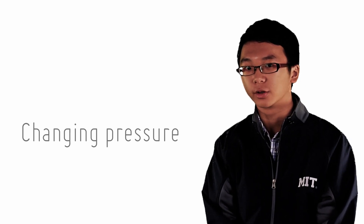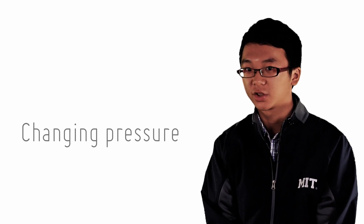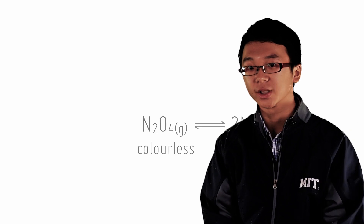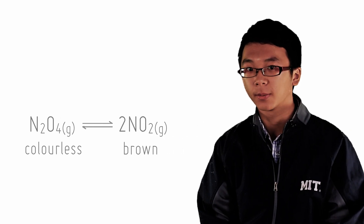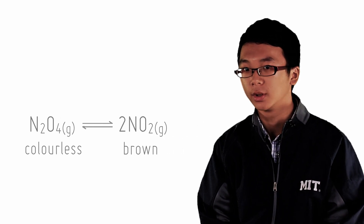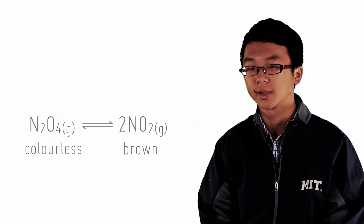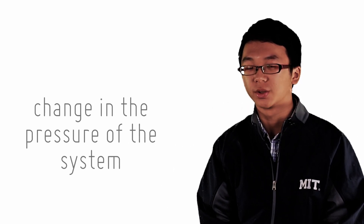Now let's look at how a change in pressure can affect the equilibrium of a gaseous system. Let's try this reaction: colorless N2O4 decomposes into 2NO2, which is brown. This system is now in equilibrium. Now let's change the pressure.